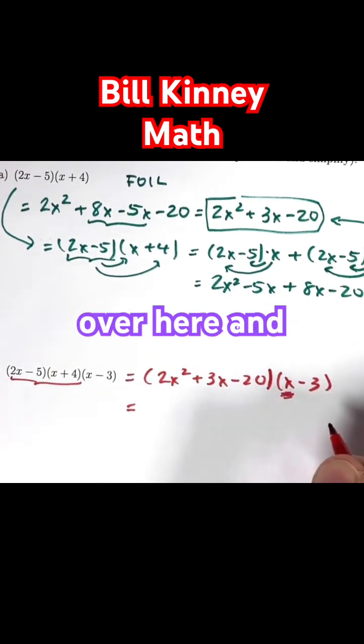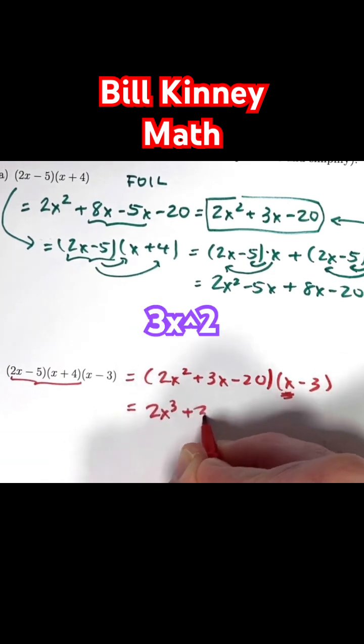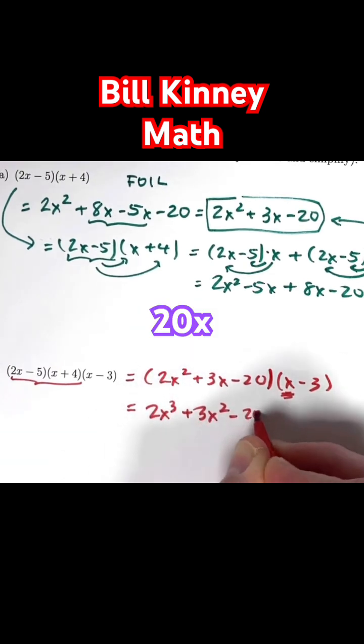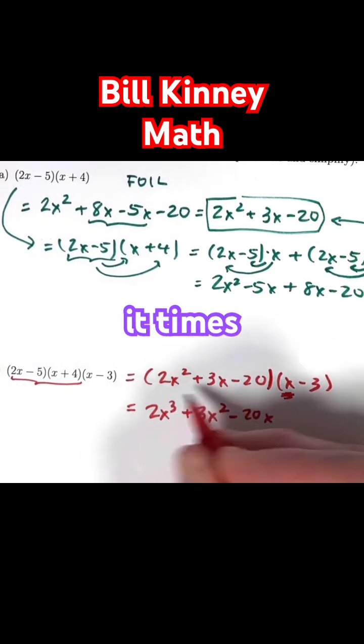take the x term over here and multiply times every term to get 2x cubed plus 3x squared minus 20x, and then go to the minus 3 and multiply it times every term.